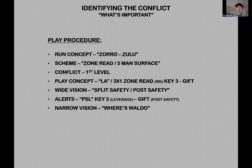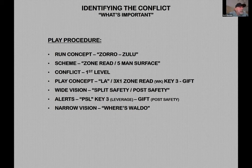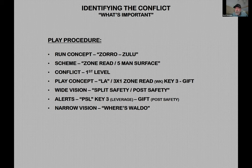Our run concept is called Zoro Zulu, which is zone read with a five-man surface — meaning we only have five blockers in the box. We're not in two backs or with a tight end blocking; we're basically in a spread set. The quarterback knows in this five-man surface that the conflict could be a first-level conflict — a player on the first level of the defense, meaning a defensive end or a man on the line of scrimmage. The play concept we tag as 'LA' is a three-by-one zone read, running the zone read away from the three receivers, with a key three attached and a gift on the backside.